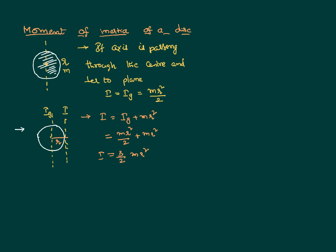Now assume we have another scenario where the axis is changed again. The disc is the same, mass and radius are the same, but the axis is now about the diameter. We want to calculate the moment of inertia about this diameter. Because of the symmetry of the body, if we draw the diameter in any direction the moment of inertia is the same — one diameter behaves like an x-axis and the other like a y-axis.